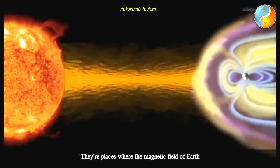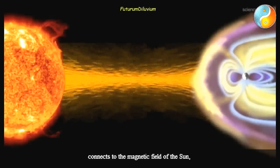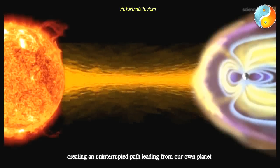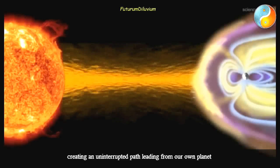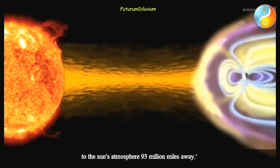They're places where the magnetic field of Earth connects to the magnetic field of the Sun, creating an uninterrupted path leading from our own planet to the Sun's atmosphere 93 million miles away.